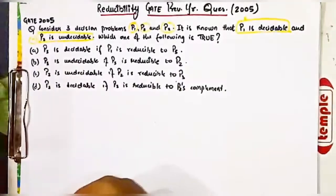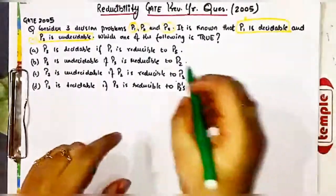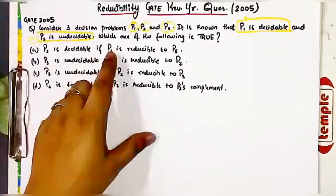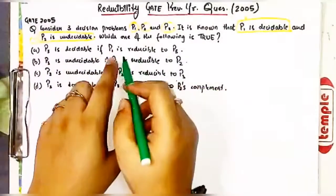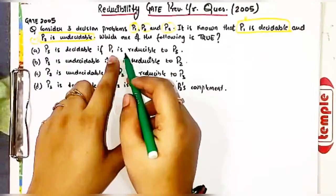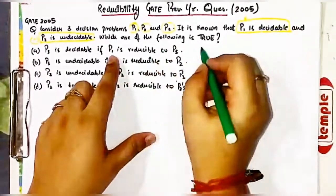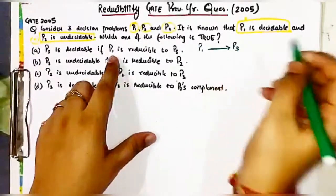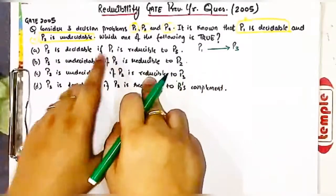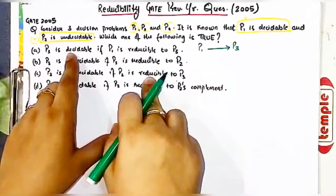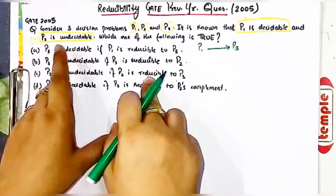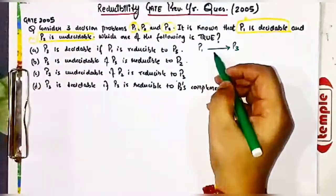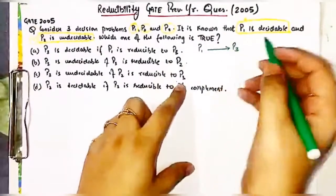In option A, it is given that if P1 is reducible to P3, then will P3 be decidable or not? We have to test whether it is true or not. Consider that P1 is reducible to P3, and we are given two statements in the question — first is that P1 is decidable.